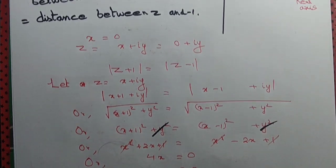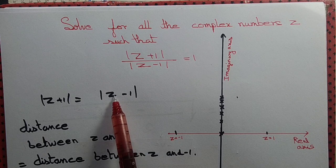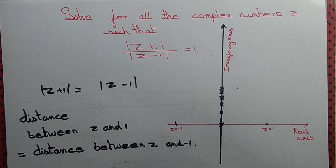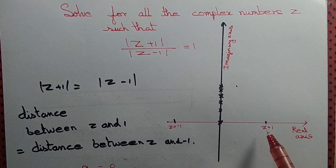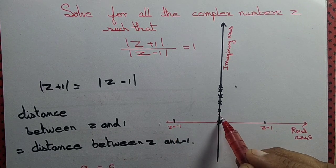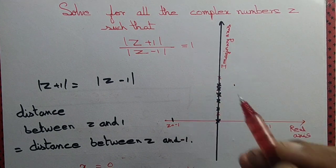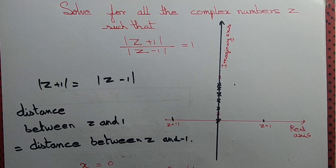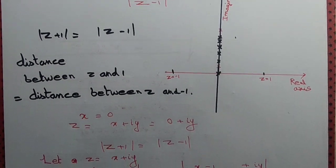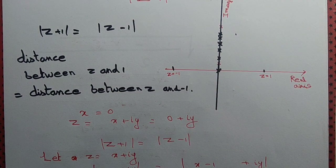However, we can simply observe that the distance between z and 1 — modulus of z minus 1 — equals the distance between z and minus 1. Drawing the graph with z equal to 1 and z equal to minus 1, all points equidistant from those two are exactly the imaginary axis. On the imaginary axis x equals 0, so z equals iy.